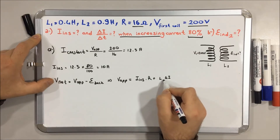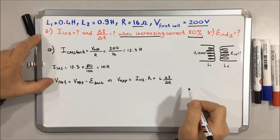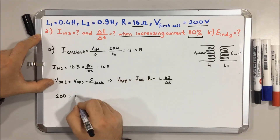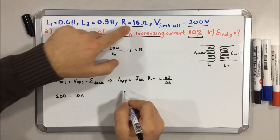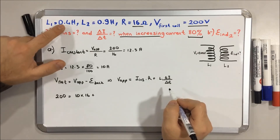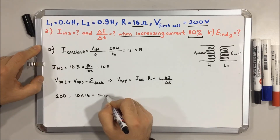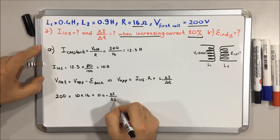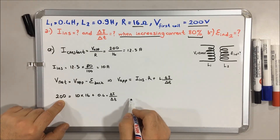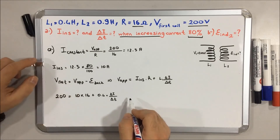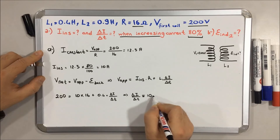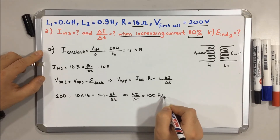Substituting: V applied (200) equals I instantaneous (10) times R (16) plus L (0.4) times delta I over delta t. That gives 200 equals 160 plus 0.4 times delta I over delta t. Therefore 200 minus 160 equals 40, and delta I over delta t equals 40 over 0.4, which gives 100 A per second.